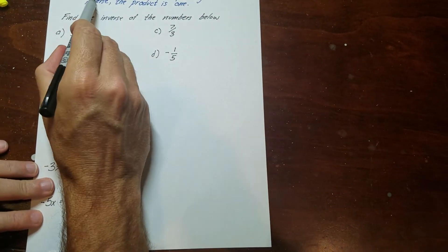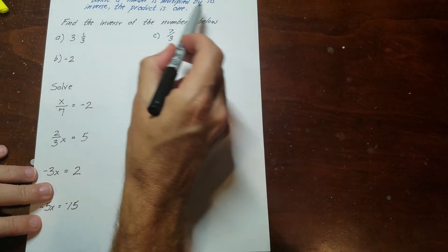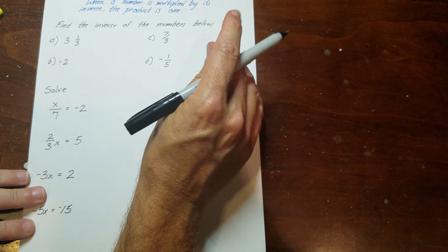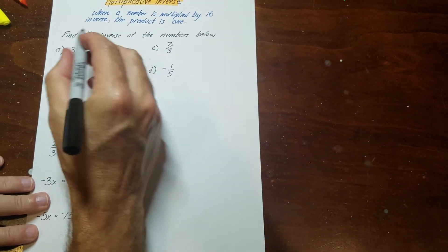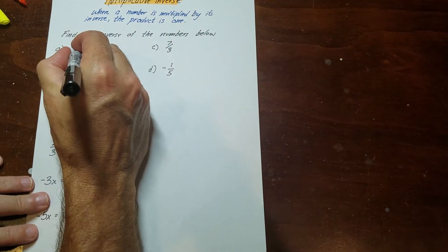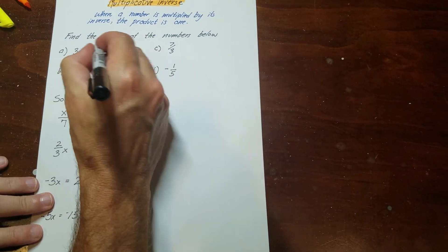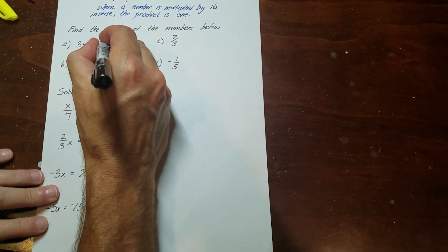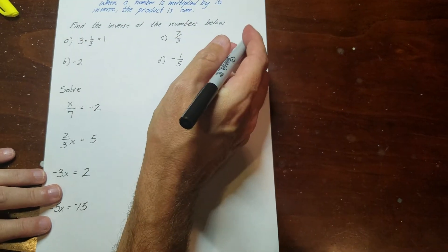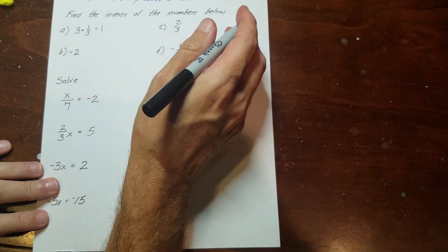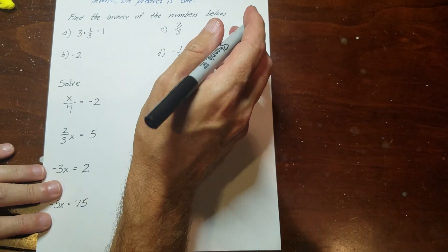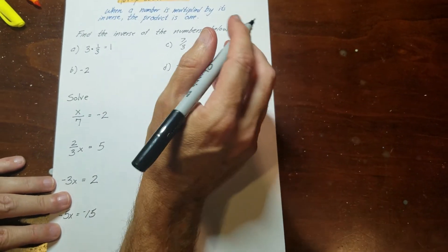When a number is multiplied by its inverse, the product is 1. So if I multiply 3 times 1 third, that gives me 1. That's how you know something is the inverse.